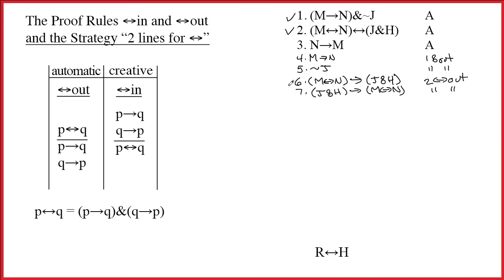But now I get to line 6. Arrow's the main connective. If I had M double-arrow N on another line by itself, then I could write J and H. Do I have M double-arrow N?